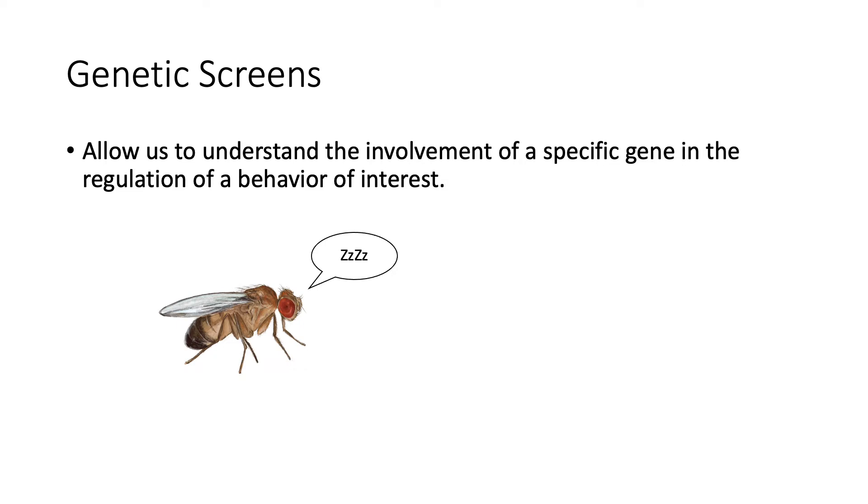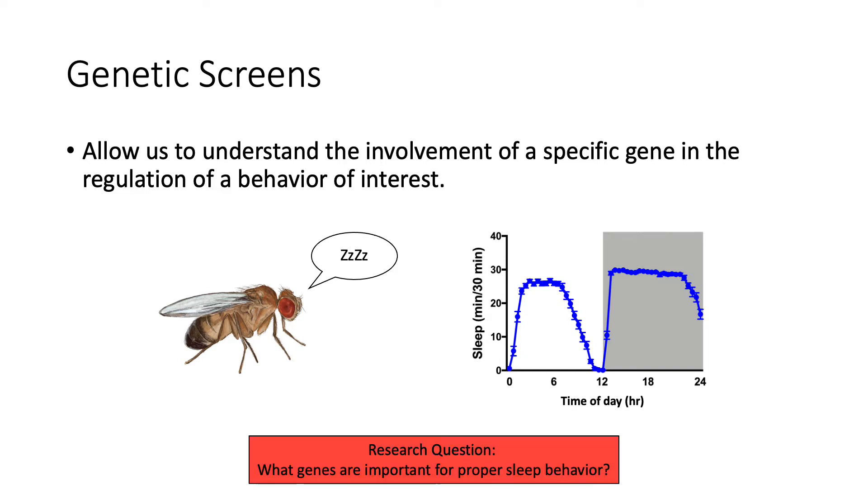Nowadays we know that flies sleep or at least they show a sleep-like behavior that pretty much resembles our own sleep, and we can quantify the sleep of a fly throughout the day as we see in this plot. On the y-axis we see how many minutes the fly has slept within bouts of 30 minutes, and we can track the amount of sleep throughout the light and dark periods of a 24 hour day as we see on the x-axis. A scientist may postulate the following research question: What genes are important for proper sleep behavior? This is a question that can and historically has been addressed by using genetic screens.